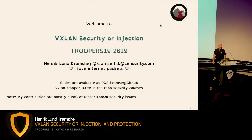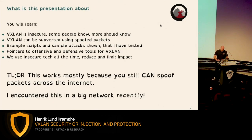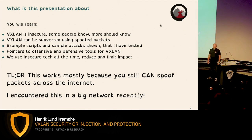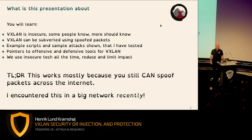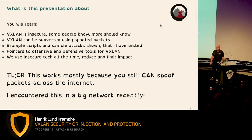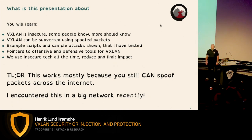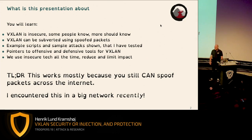This presentation is about VXLAN. VXLAN is a tunneling protocol — it's very insecure, and was just dreamt up by a few people on a napkin, I guess. A lot of network people actually know that it is insecure, but more people should know. Over the next hour we're going to talk about how we can bend VXLAN, how we can subvert it using spoofed packets, and what we can do with those spoofed packets. Sometimes we need a proof of concept to tell people how insecure something is and what the consequences are.